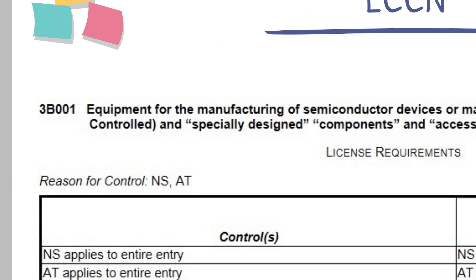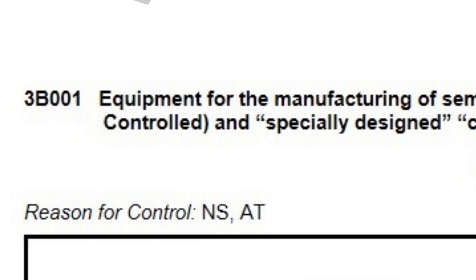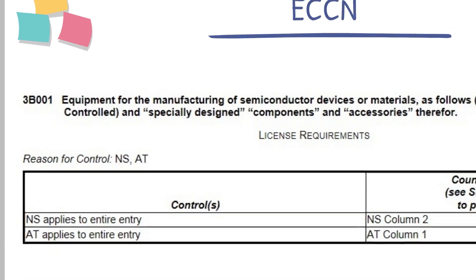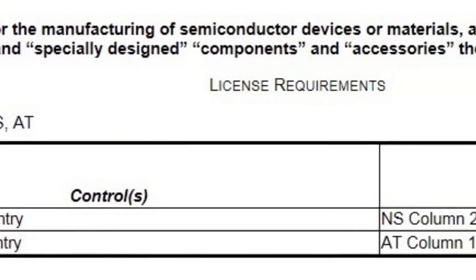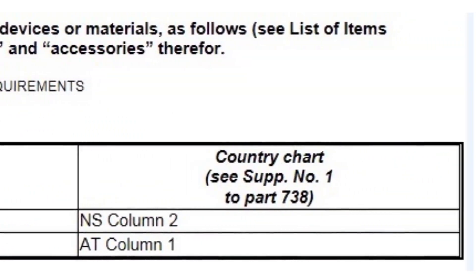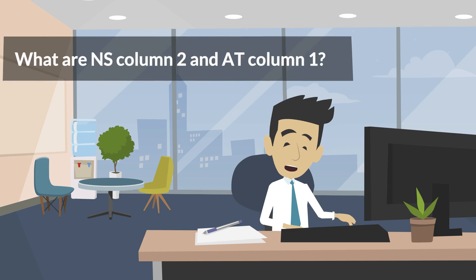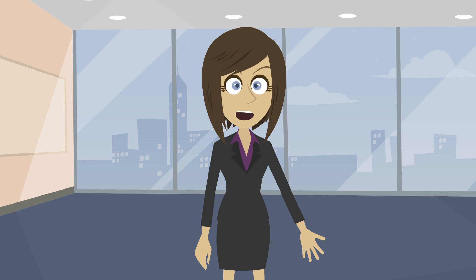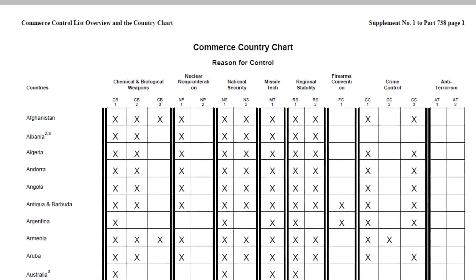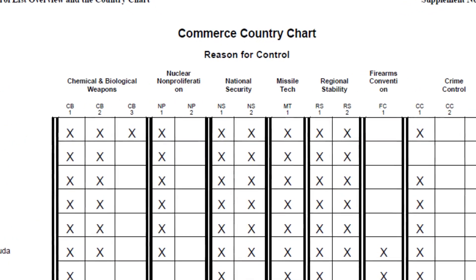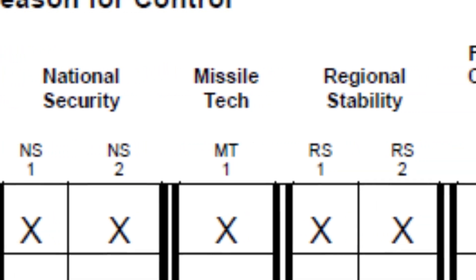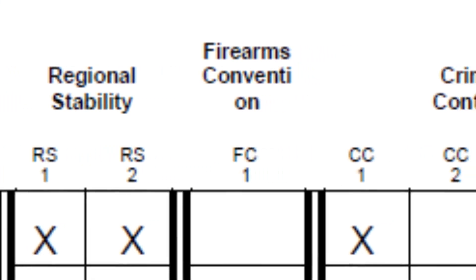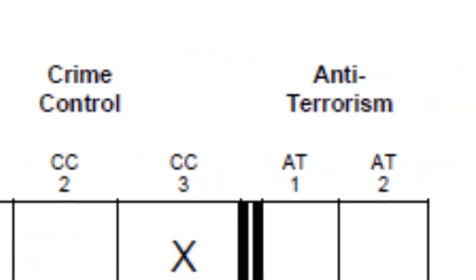This ECCN is 3B001. This controls equipment for the manufacture of semiconductor devices or materials, and specially designed components and accessories. The reasons for control are NS Column 2 and AT Column 1. This is the perfect time to introduce you to the Commerce Country Chart. The Commerce Country Chart contains licensing requirements based on destination and reasons for control. NS stands for national security, AT stands for anti-terrorism. The number stands for the specific column 1, 2, or 3 under the reasons for control.